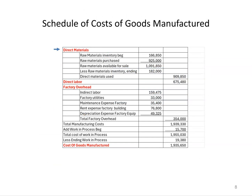Now let's take a look at what that schedule looks like based on that information. We start with direct materials: we bring in the beginning materials inventory, add in raw materials purchases, and take out the ending balance they provided — that tells us how much we used. Next we add direct labor, then factory overhead. Once we have total manufacturing costs, we add in the work in process beginning balance and subtract out the ending balance, which gives us cost of goods manufactured. Always remember to look for beginning and ending balances.